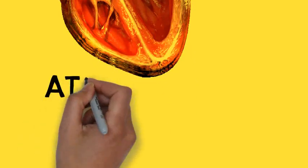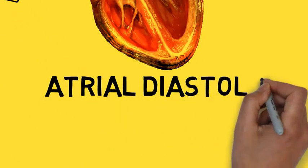In a simple way, first the atria contract. When the atria contract, all blood goes to the ventricles. So the atria are now relaxing. That is atrial diastole.